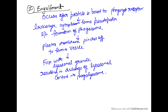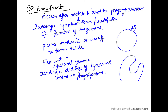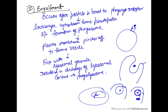The second step is engulfment, which occurs after the particle is bound to the phagocyte receptor. So if we have a phagocyte with a receptor, and the dead particle — dead tissue or bacteria — is attached, the leukocyte cytoplasm will form pseudopodia, leading to the formation of a phagosome. The plasma membrane pinches off to form a vesicle — the phagosome. The lysosome inside the cell then fuses with the phagosome, forming a phagolysosome, and the lysosomal contents are discharged into it.